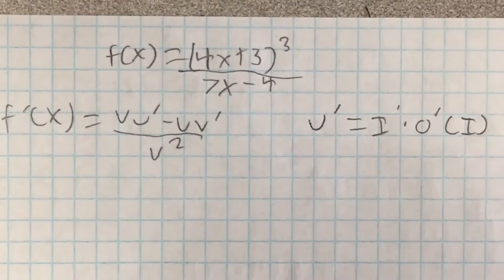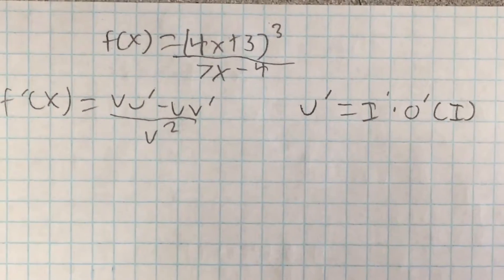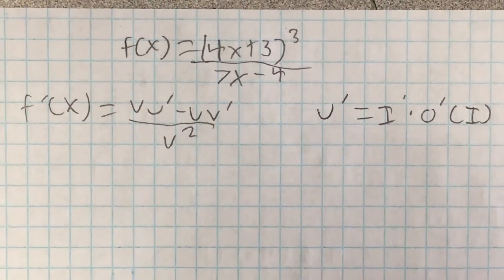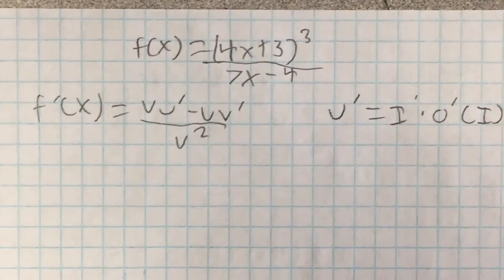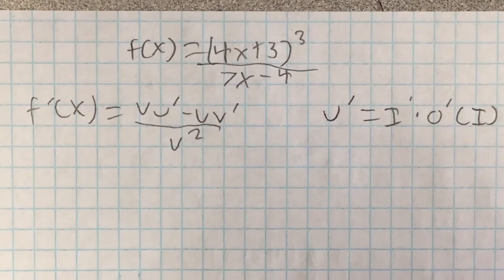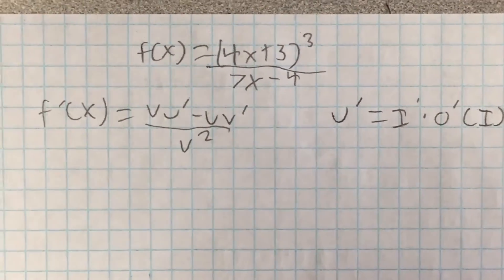And then for our chain rule, which is going to be our u, it's going to be u prime equals i prime times o prime with the original i inside.